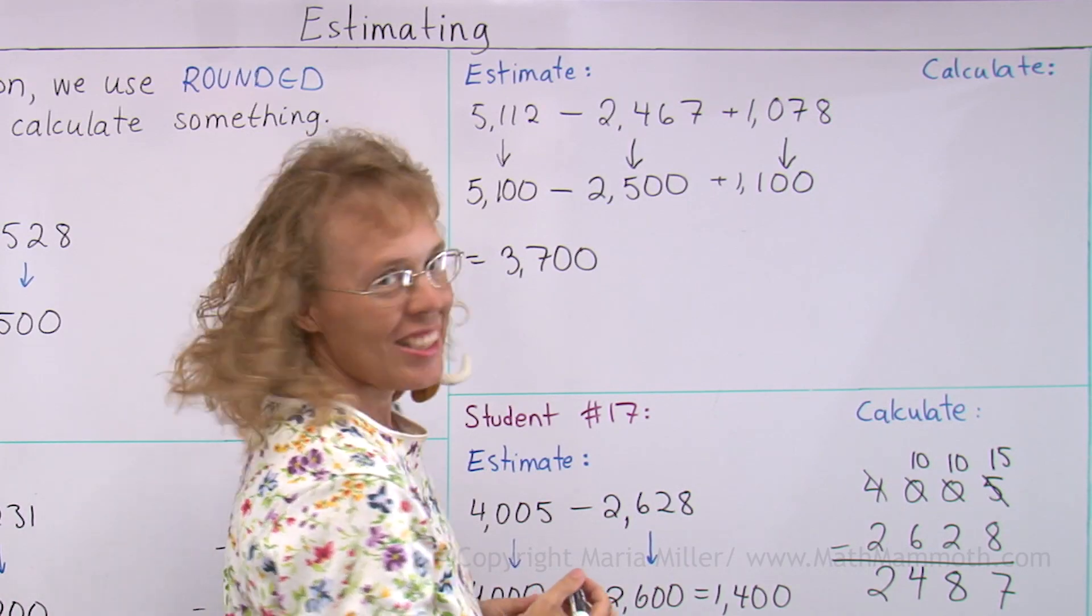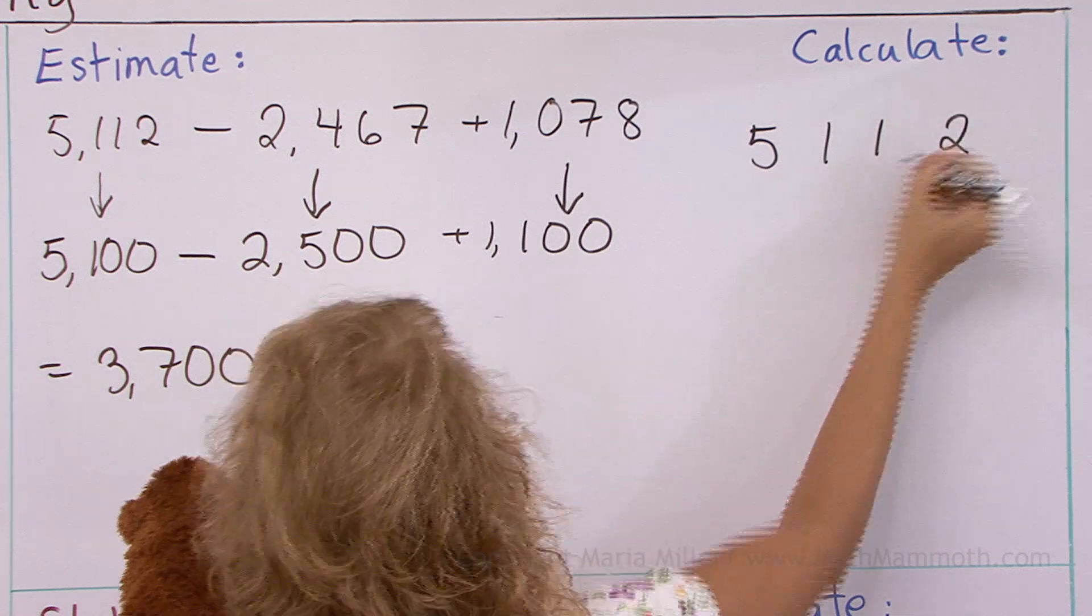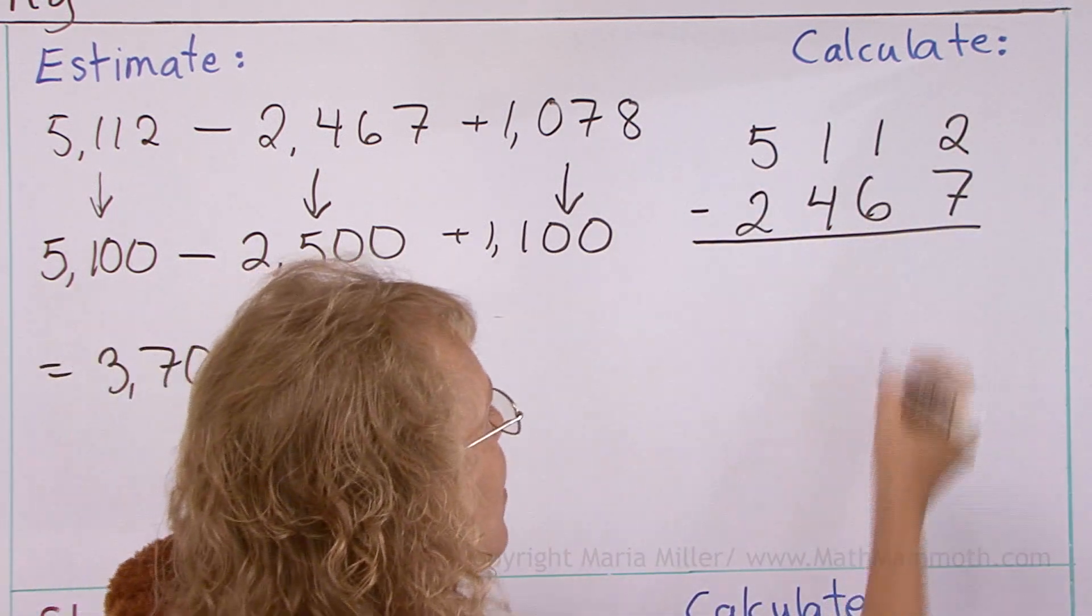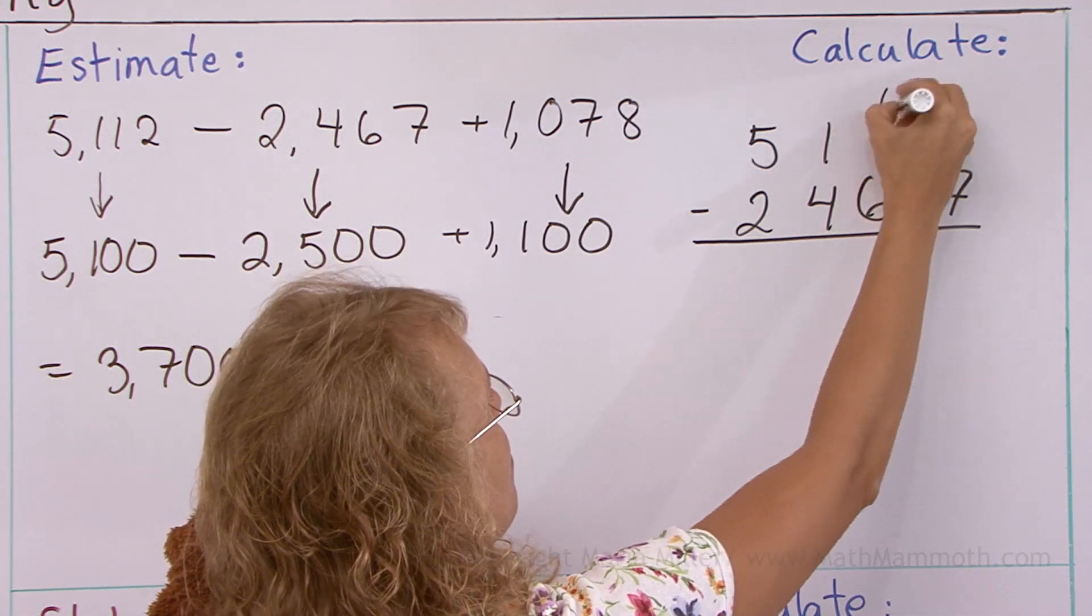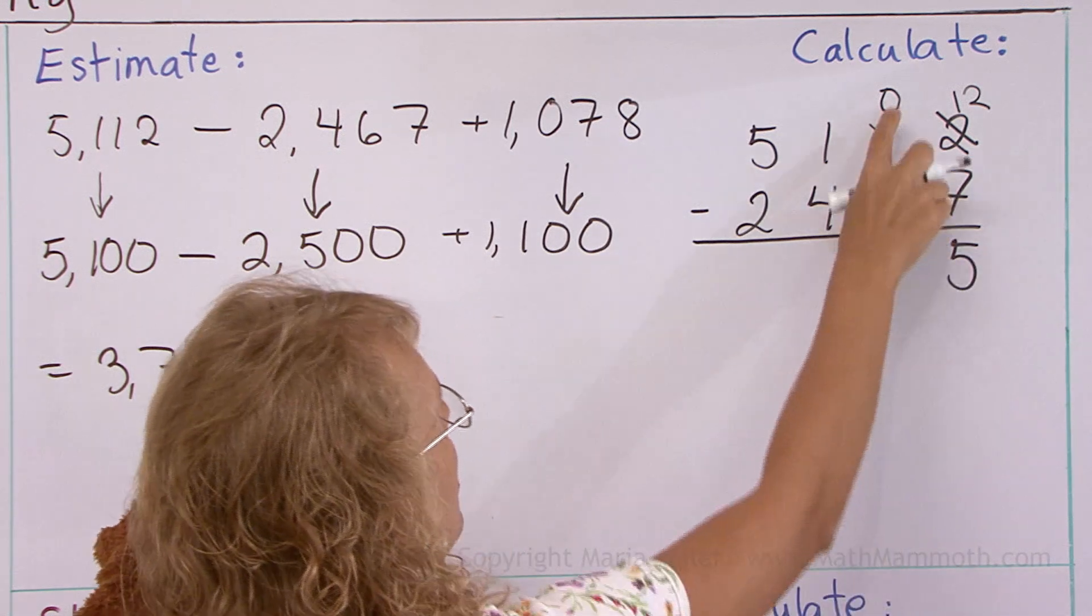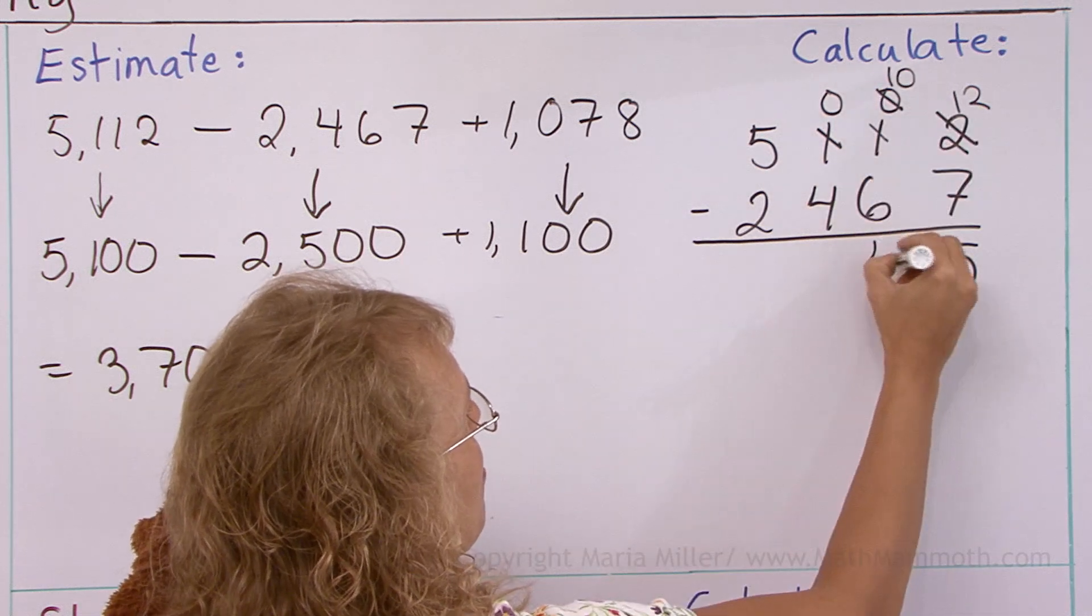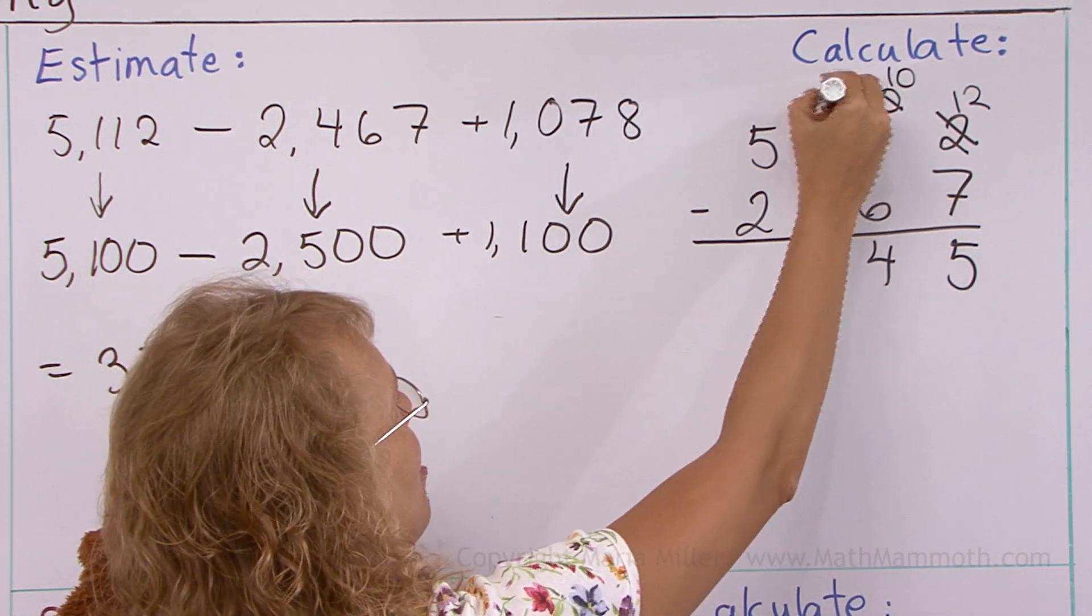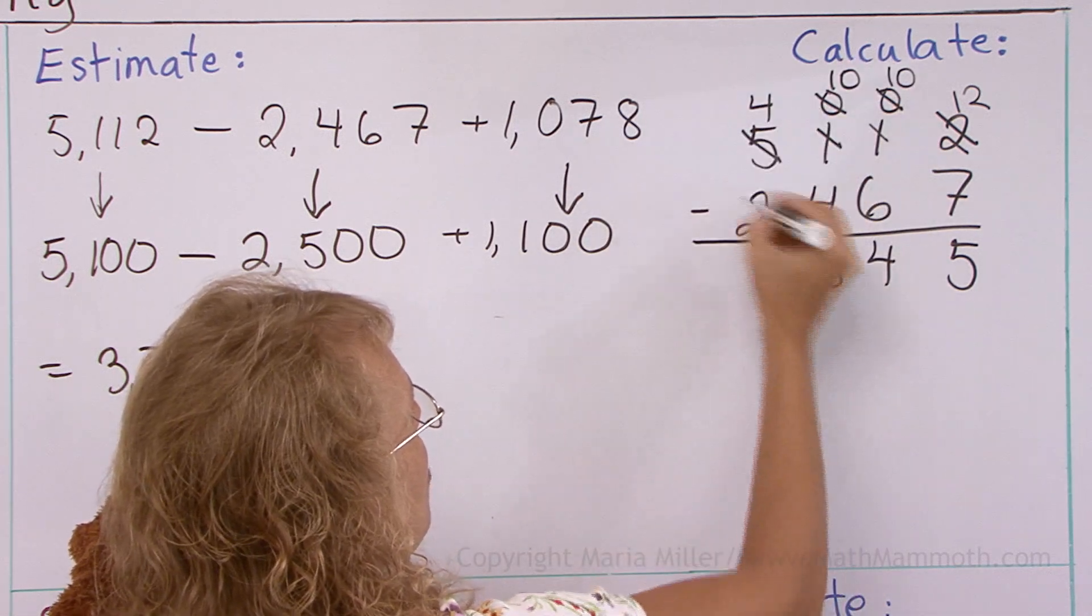And now let's see how it goes when we calculate exactly. First a subtraction. 2 minus 7, here I need to regroup. And then 0 minus 6, again, same thing, need to regroup. And 0 minus 4, one more time. And 4 minus 2 is 2.